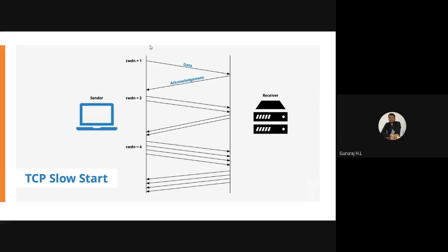The first phase of TCP is called TCP Slow Start. The slow start operation always begins with zero — initially the congestion window has no packets. In the first iteration, I send one packet and get back the acknowledgement. In the second iteration, I send two packets. In the third, four packets. Then 16 — this growth is called exponential growth.